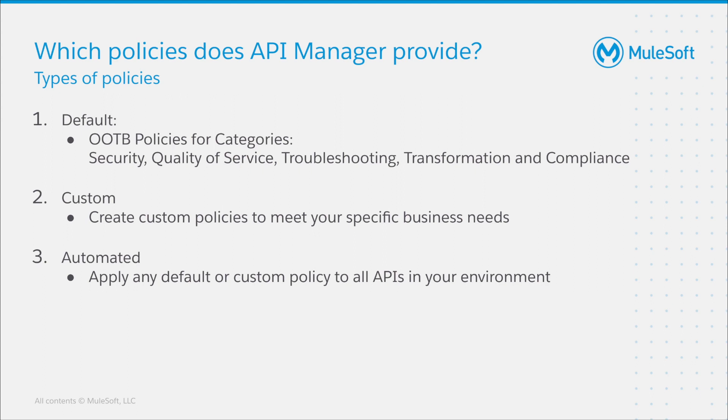The second type are custom policies. Whenever default out-of-the-box policies are not sufficient for your use case, you can create your own custom policy to meet your specific business needs. For example, customers who require custom data masking without tokenization could develop a custom policy to achieve that goal. Another example could be to implement a custom policy for identity-based payload trimming. The third type are automated policies, meaning you can apply any default or custom policy to all of your APIs in an environment. All currently deployed APIs and all future APIs deployed into that environment will automatically have the specified policy enabled.